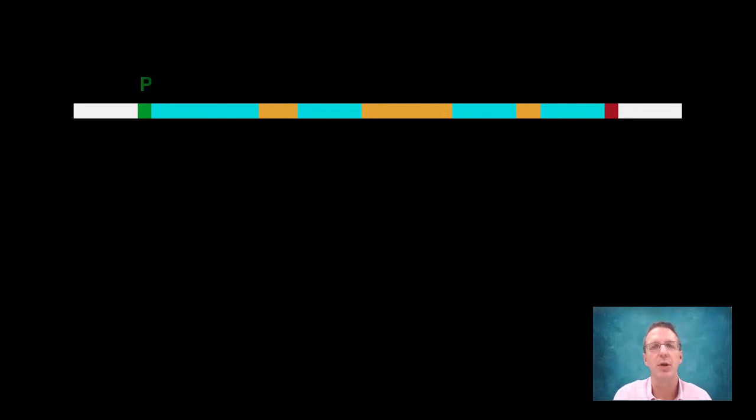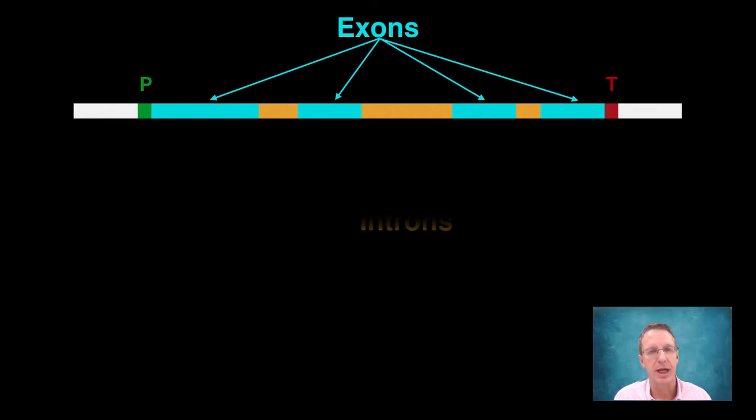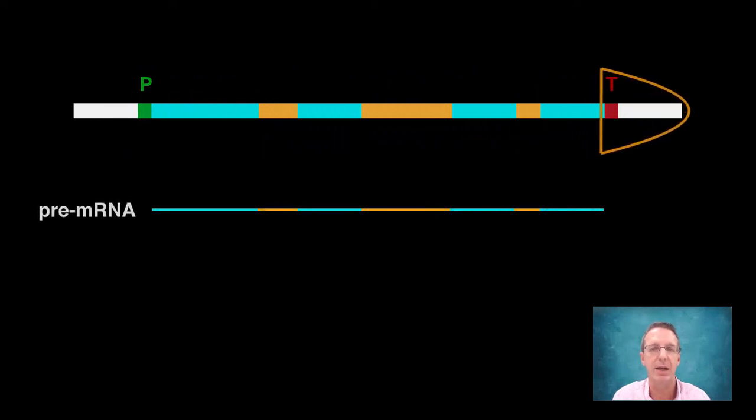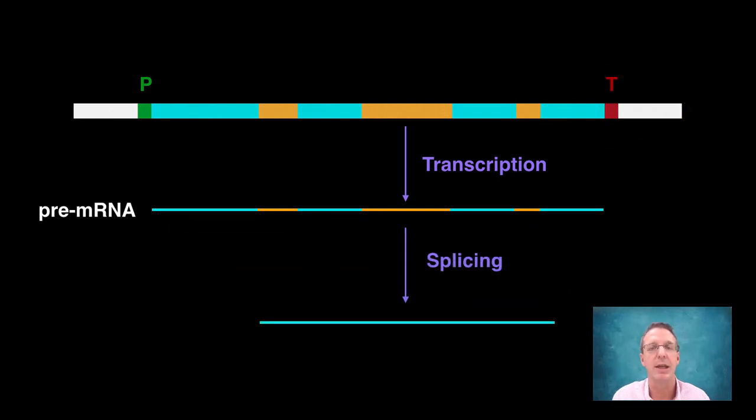It turns out that the area between the promoter and the terminator is divided up between alternating sections called exons and introns. So, exons, here shown in blue, are parts of the DNA that actually code for the protein, and therefore will be the areas that will be translated by the ribosomes. Introns, on the other hand, are sequences of DNA that do not code for protein, and thus need to be removed from the pre-mRNA before the translation process. So, when the RNA polymerase transcribes a gene, it produces a pre-mRNA molecule that contains both exons and introns. It is now up to another set of cellular machinery to remove these introns, forming the final mRNA that contains the continuous code for the protein. And this process is called splicing.